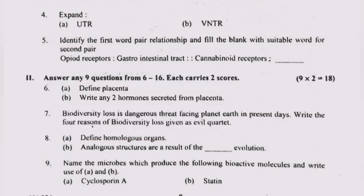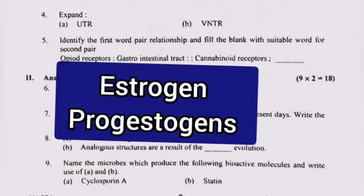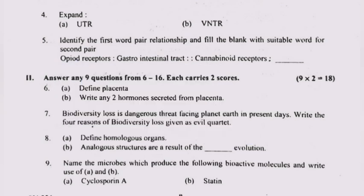Question 6B: Write any two hormones secreted from placenta. Answer: Oestrogen and progesterone.